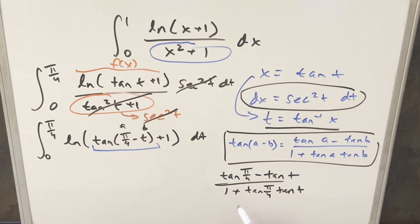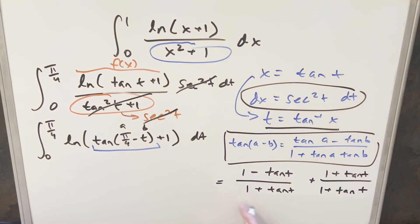But tan of pi over four is just one. So that's going to be nice. Then let's take this plus one, and we'll just get a common denominator with this. Getting the common denominator one plus tan of t, that's going to allow me to add these two things together. When we add these with the common denominator, the tangents are going to cancel, and what we're left with is just two over one plus tan t.